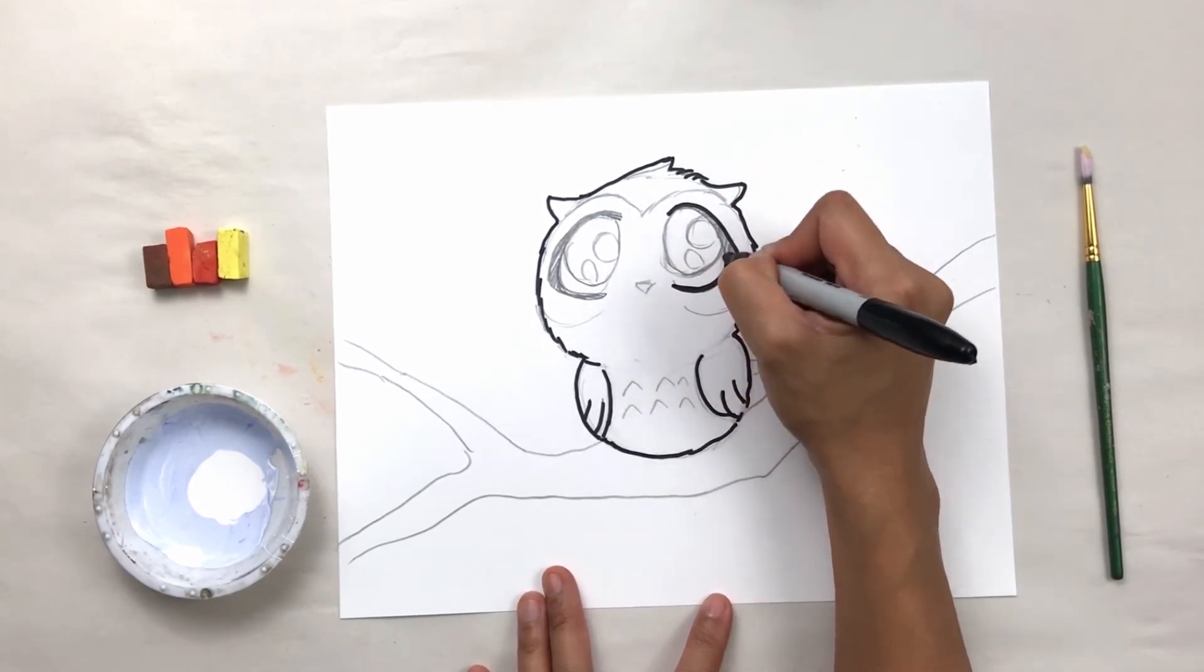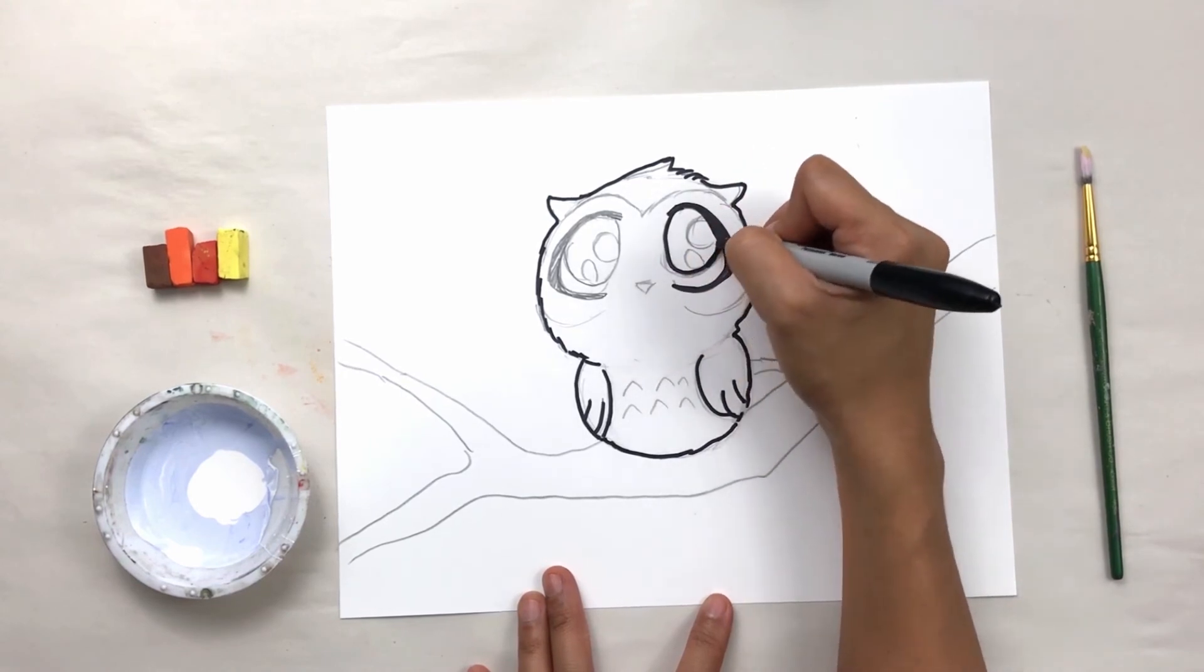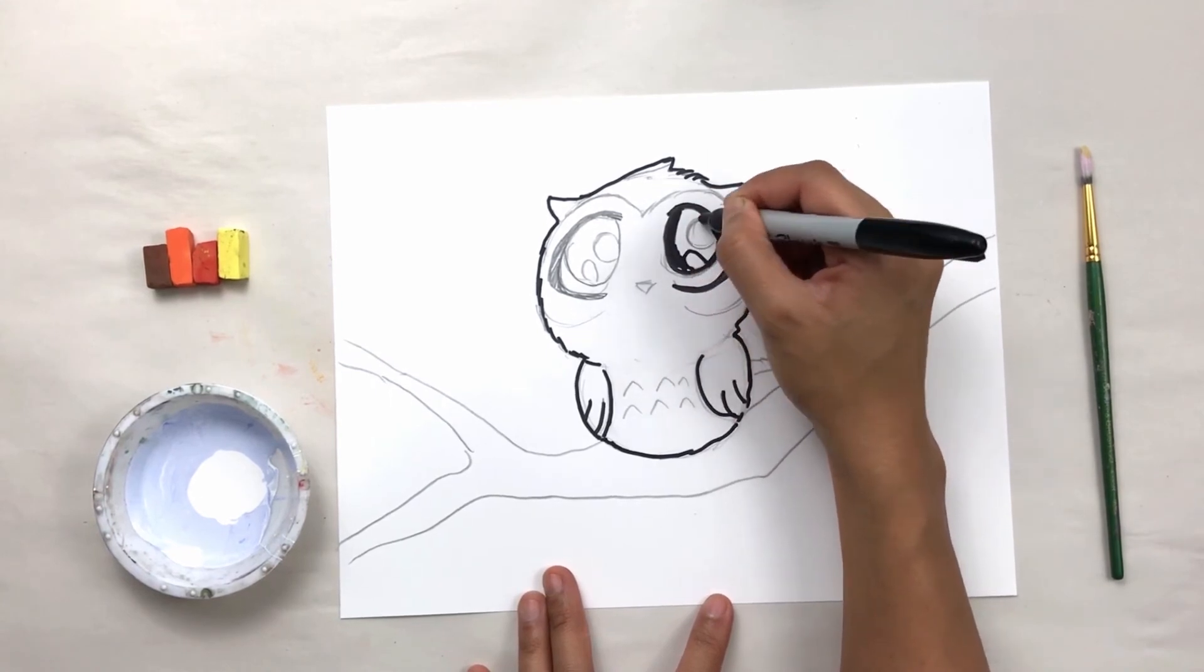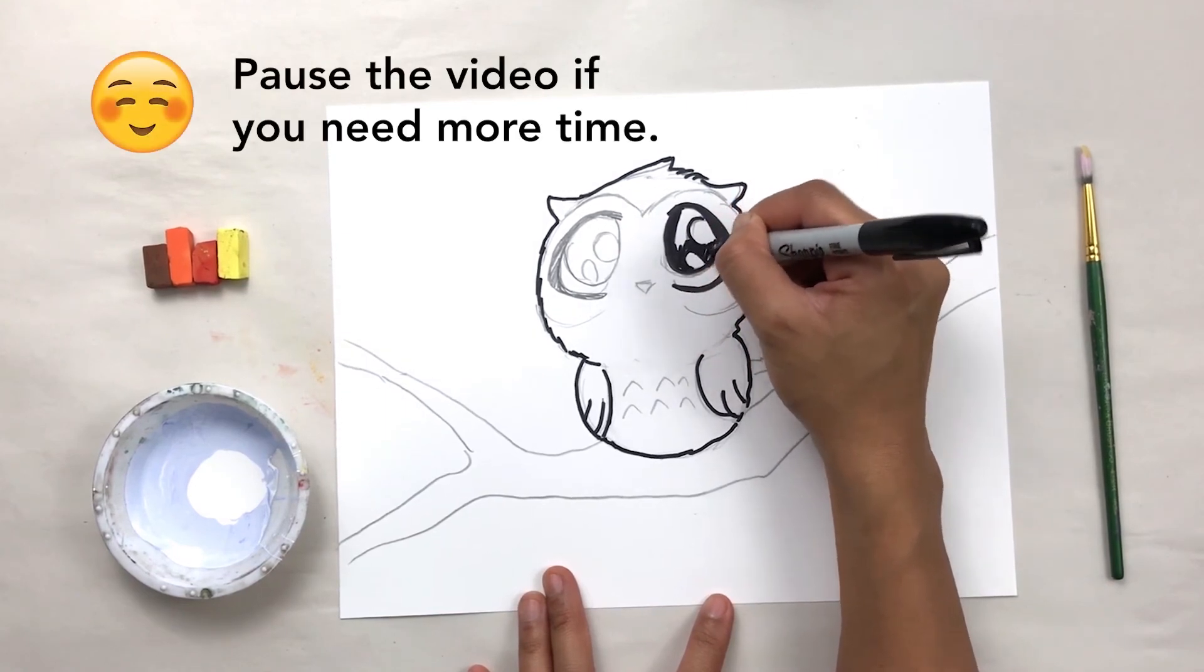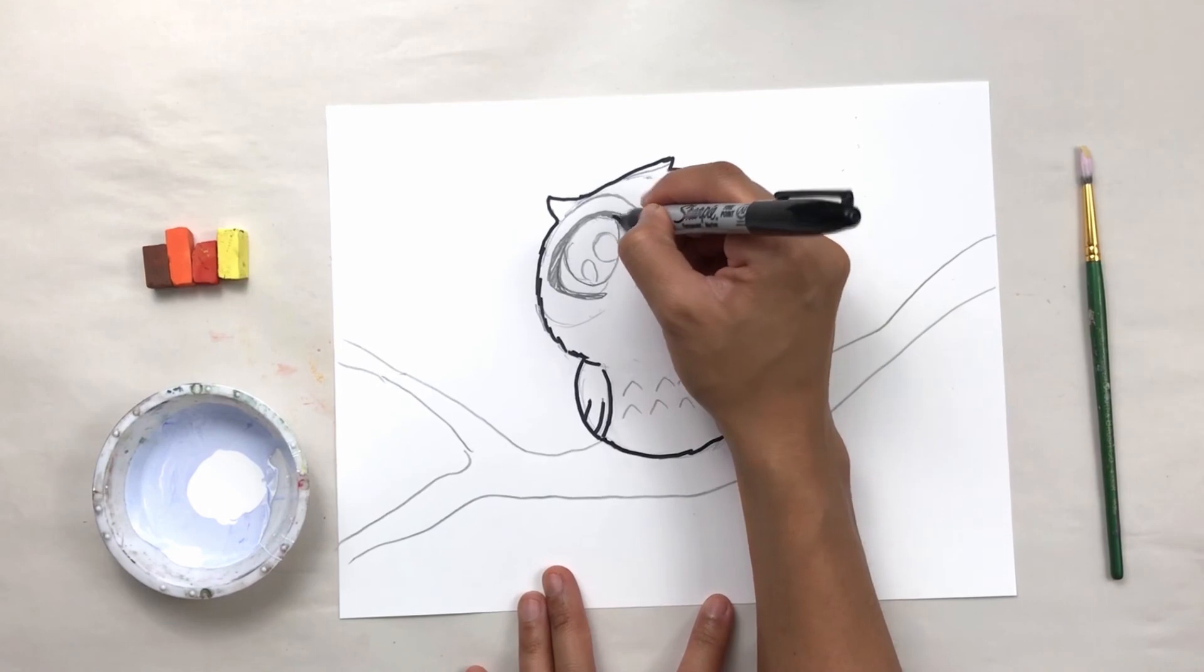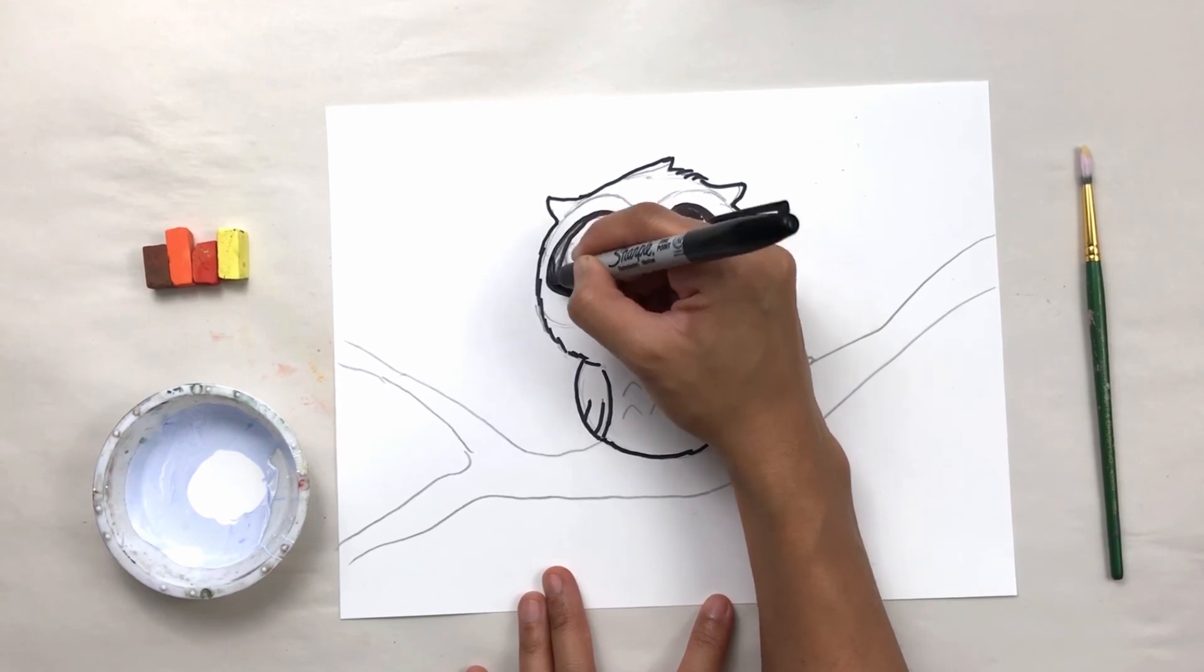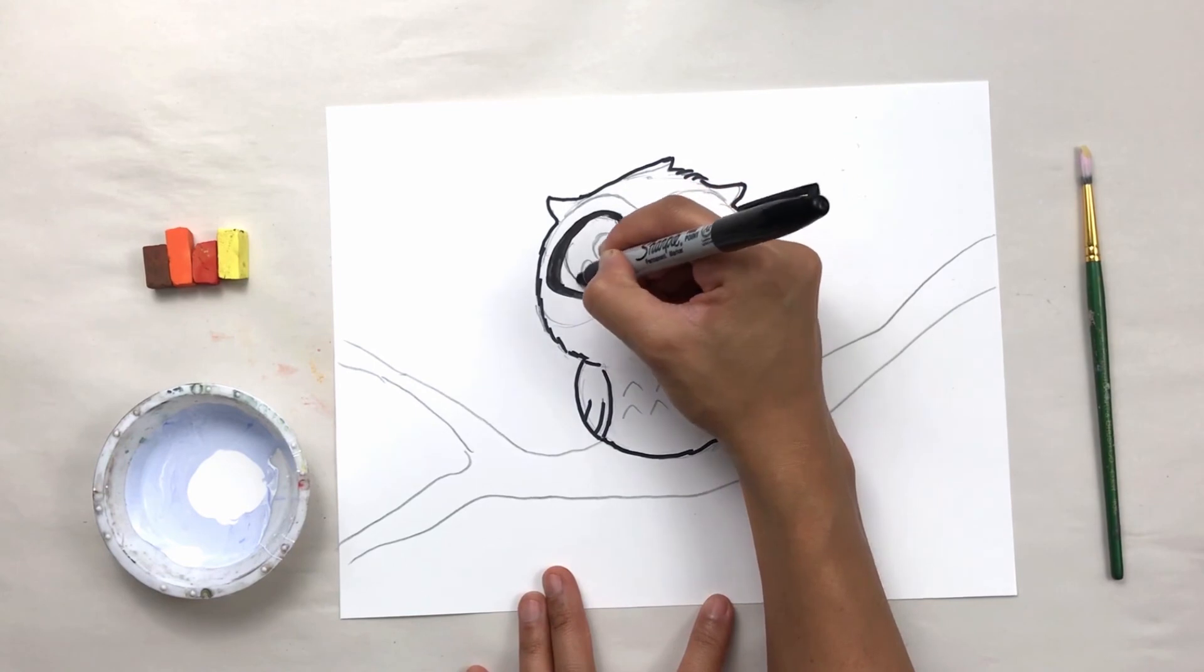All right. So you're just tracing everything like this. And then for the eyes, I'm actually going to color it in. You can change the color of your owl's eyes if you want. So if you want your owl eyes to have blue eyes, green eyes, whatever it may be, you can do that. I'm going to use black just because it's a little bit more striking for me. Oh, too cute.